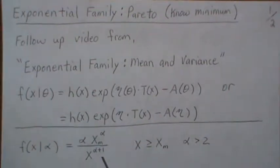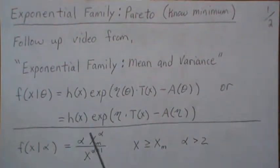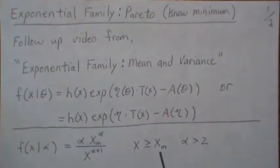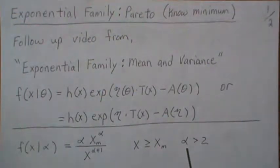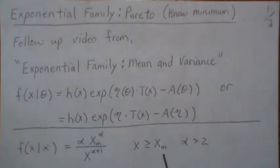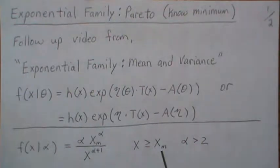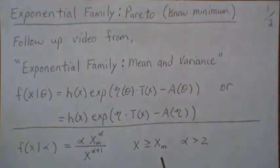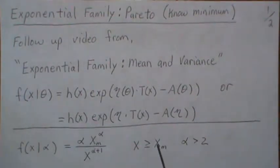Let's jump right into the Pareto distribution. Now X has to be greater or equal to some known minimum, and we're going to assume alpha is greater than 2 so we can find the variance. If we don't know the minimum then this doesn't fit into the exponential family of distributions, so we have to assume we know X of M, which is the minimum.